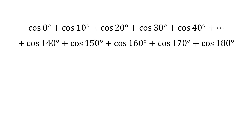We have an expression that is the sum of cosine of 0 degrees, cosine of 10 degrees, cosine of 20 degrees, and so on, and the last term is cosine of 180 degrees. We need to find the value of this expression without the use of a calculator.